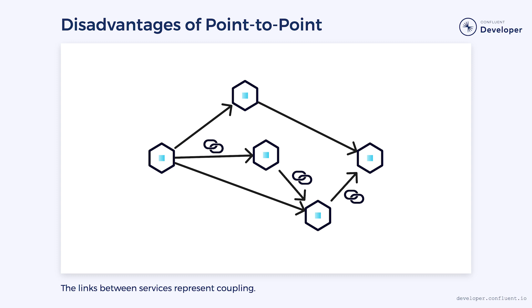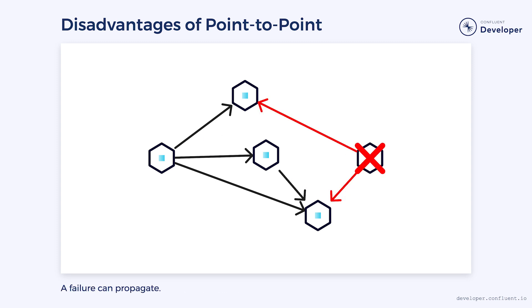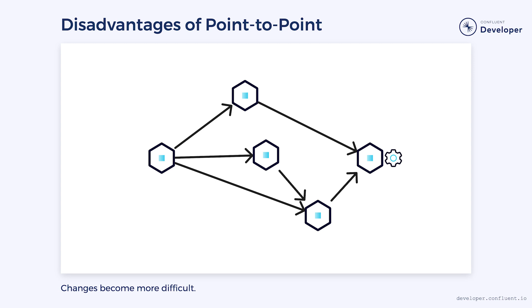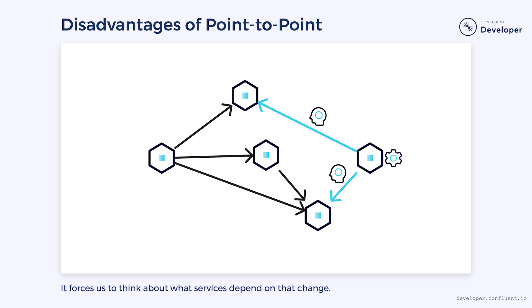When the system is small, point-to-point communication shines, but as it grows it can experience pressure from all of the direct links. Each link represents a type of coupling. The sender is coupled to the receiver because it needs to know that the receiver exists and where it can be found. Because these systems are often synchronous in nature, it creates temporal coupling. Physical and temporal coupling can create issues in the system. If a failure occurs in one microservice it can propagate to others, causing small problems to grow into larger problems. It can also make it difficult for the system to evolve, as each dependency creates rigidity. Changing a microservice becomes difficult because we have to think about the services that depend on it.